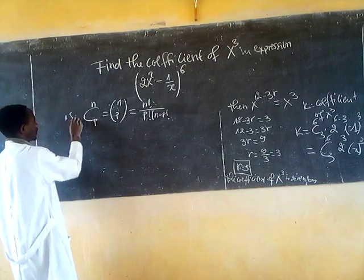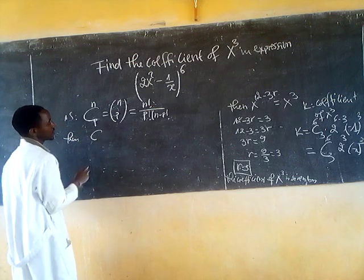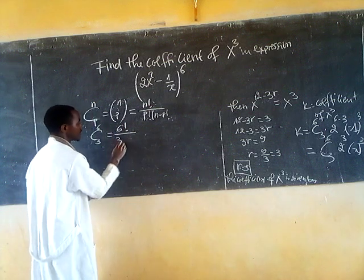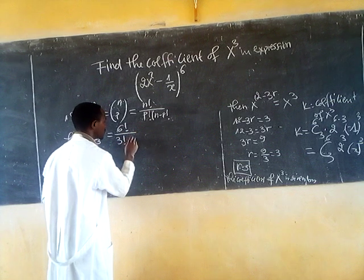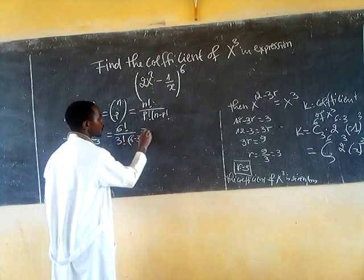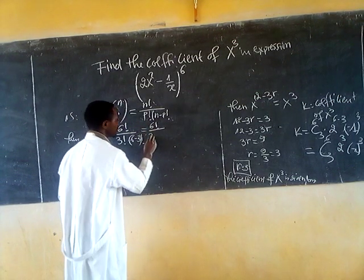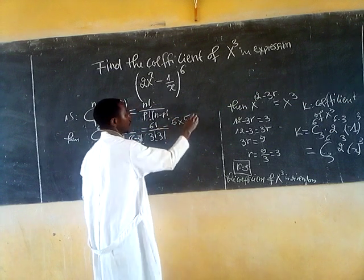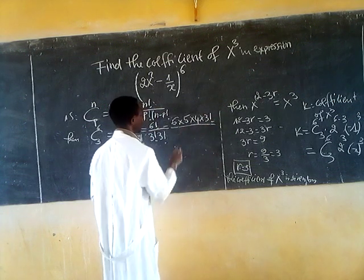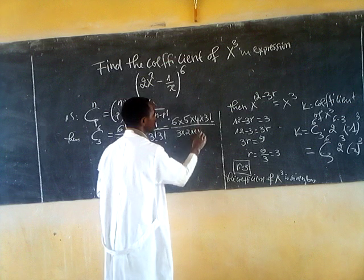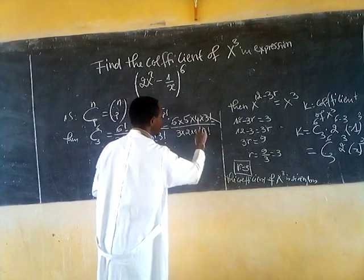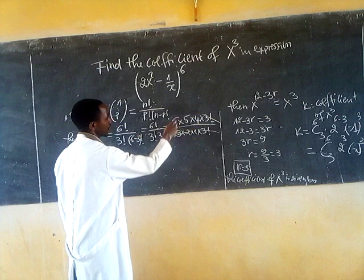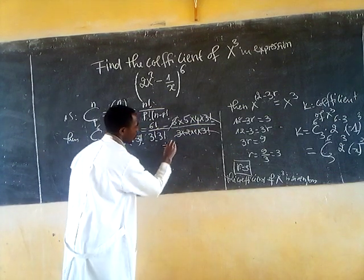So we have combination of 6 choose 3, which equals 6 factorial divided by 3 factorial times (6 minus 3) factorial. This simplifies and equals 20.